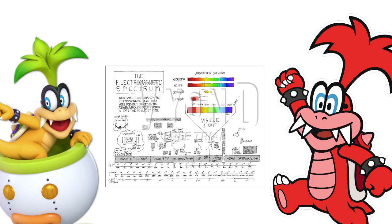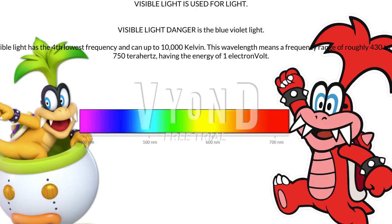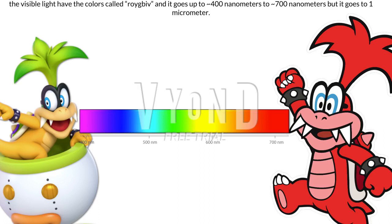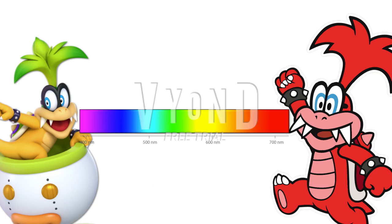Visible light consists of red, orange, yellow, green, blue, indigo, and violet wavelengths. Visible light is used for light. Visible light danger is the blue-violet light. Visible light has the fourth lowest frequency and can go up to 10,000 Kelvin. This wavelength means a frequency range of roughly 430 to 750 Terahertz, having the energy of one electron volt. The visible light has the colors called ROYGBIV and goes up to 400 nanometers to 700 nanometers. ROYGBIV is just like a rainbow.